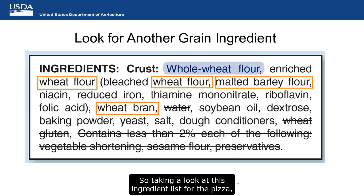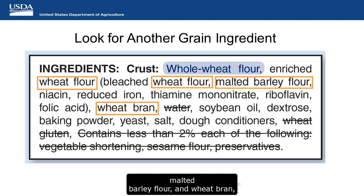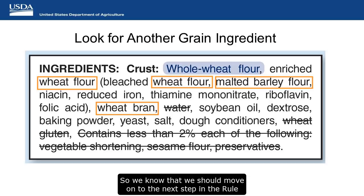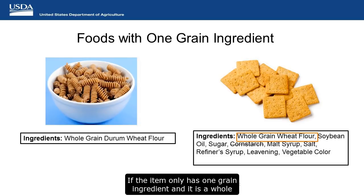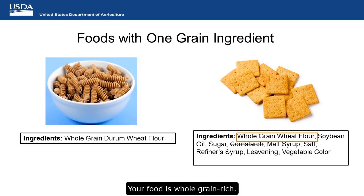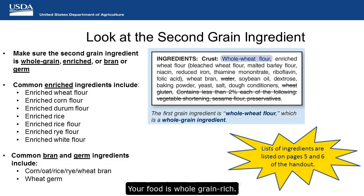Looking at this ingredient list for the pizza crust, we see other words suggesting there may be additional grain ingredients, such as wheat flour, malted barley flour, and wheat bran, outlined in orange on your screen. So we know we should move on to the next step in the rule of three and look at the second grain ingredient. Some grain foods may have only one grain ingredient, like the pasta and crackers shown on screen. If the item only has one grain ingredient and it is a whole grain ingredient, then you can stop — your food is whole grain rich.